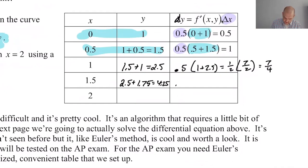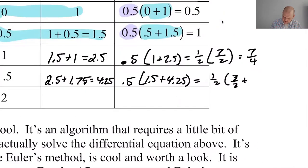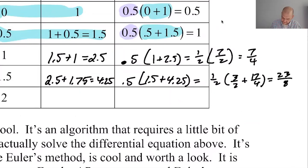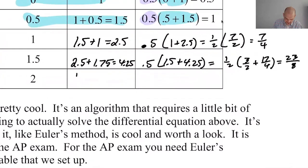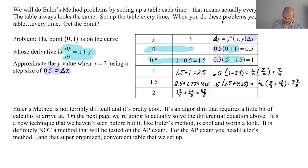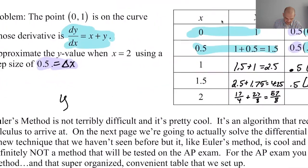So the old y plus dy: 2.5 plus 1.75 is 4.25. Then we plug in 1.5 and 4.25 into dy/dx. Working through the fractions — 3/2 plus 17/4 gives 23/4, times 1/2 is 23/8. Then 17/4 plus 23/8 is 34/8 plus 23/8 = 57/8. So y of 2 is approximately 57 over 8.